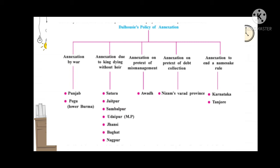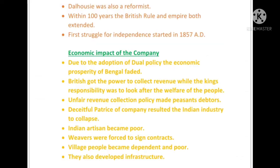The third policy was annexation on the pretext of mismanagement — if a state was not managing its administration properly, the British would take control of it. This is how the King of Avadh lost control over his state. The fourth policy was annexation on the pretext of debt collection — they could take control of provinces that were in debt and unable to pay, which is how they acquired the Nizam's province. The fifth policy was annexation to end a namesake rule — they took control of regions that existed in name only, such as Karnataka and Tanjore.